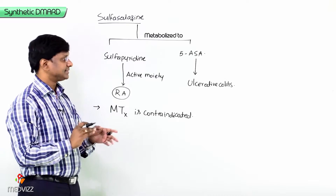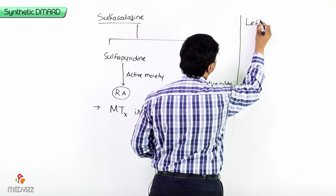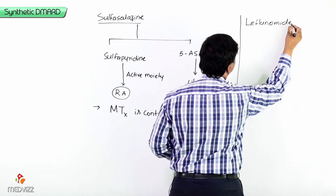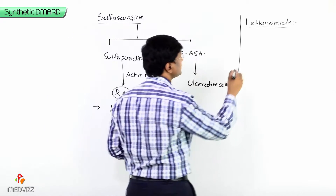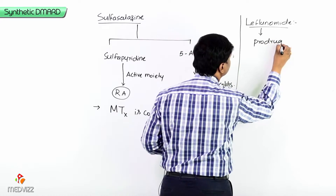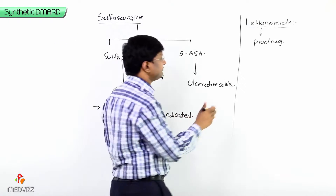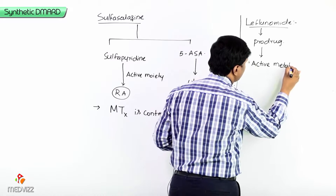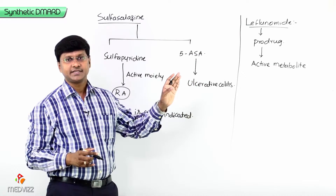Next, let me take up another synthetic DMARD which is leflunomide. Leflunomide is a prodrug — it has to be converted into an active metabolite.